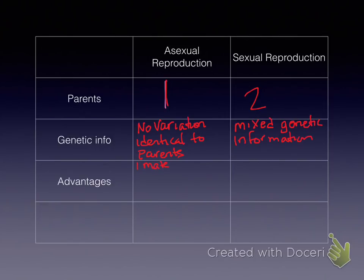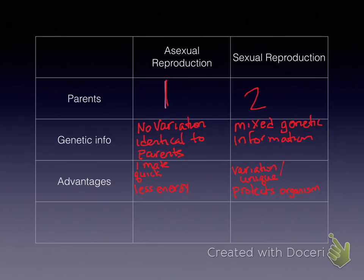Moving on to advantages: in asexual reproduction, there's just one parent — you don't need to find somebody else. It's quick because of that, and it takes less energy. On the flip side, in sexual reproduction, variation and uniqueness is an advantage because of disease, genetic deformities, and mutations — it's good to have variation. It helps get rid of mutations, which protects the organism by weeding out the bad stuff.